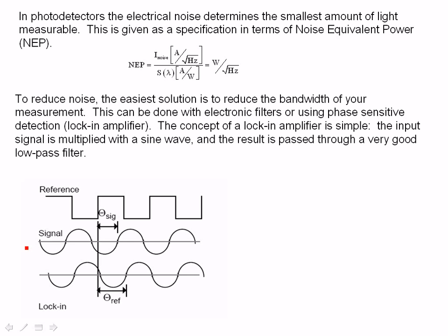So in phase-sensitive detection, the input signal at a frequency, let's call it omega r, as seen in the figure at the bottom, is multiplied with a reference sine wave which is at a frequency, omega l.